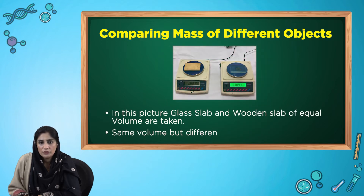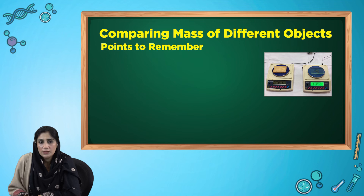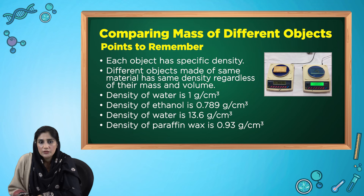Look at another picture with wooden and glass slabs of the same size. They both have different masses because they are made up of different materials. There are certain points to keep in mind: each object has a specific density that remains the same regardless of different mass and volume. It is a property of materials, since each material has its own specific density. Therefore, different objects made of the same material have the same density regardless of their mass and volume. For your reference, densities of different objects are mentioned here.